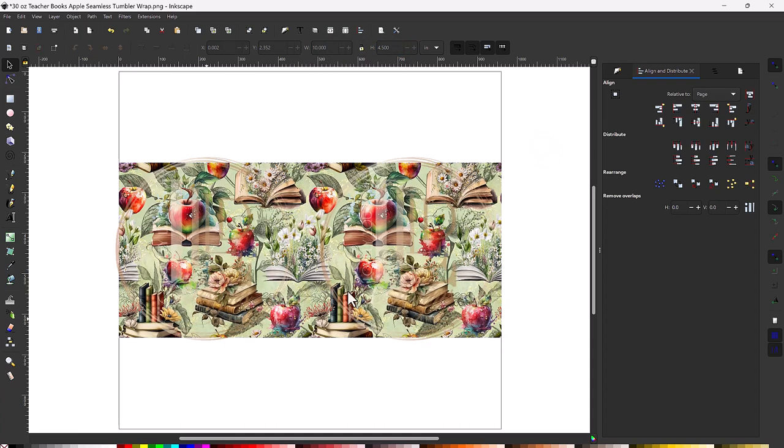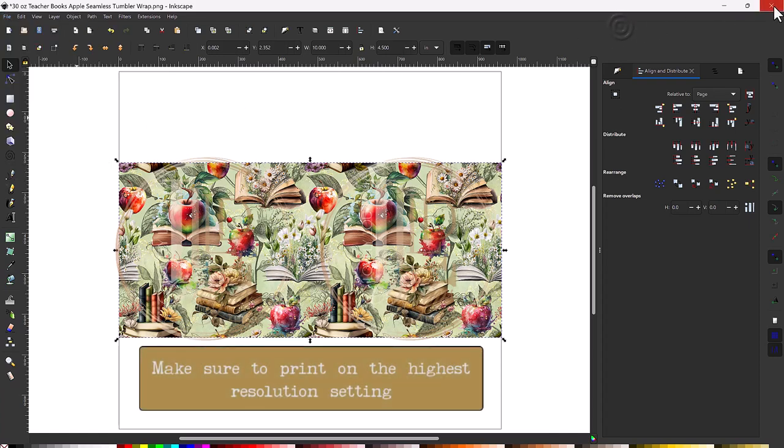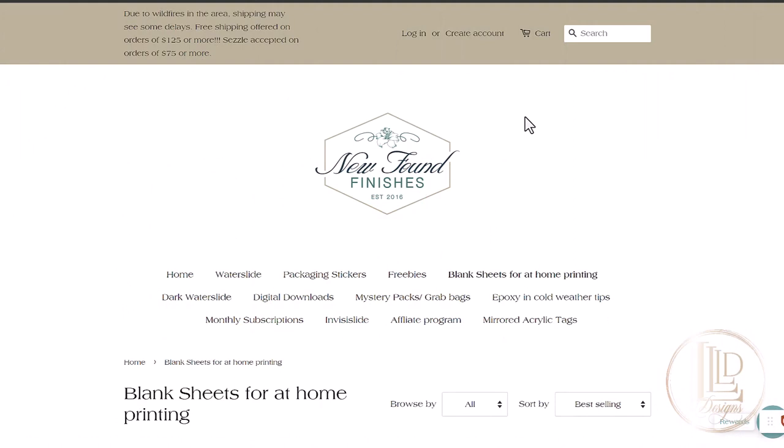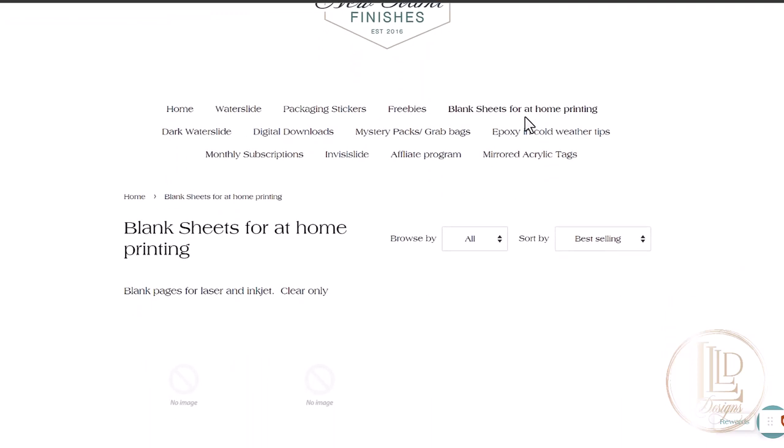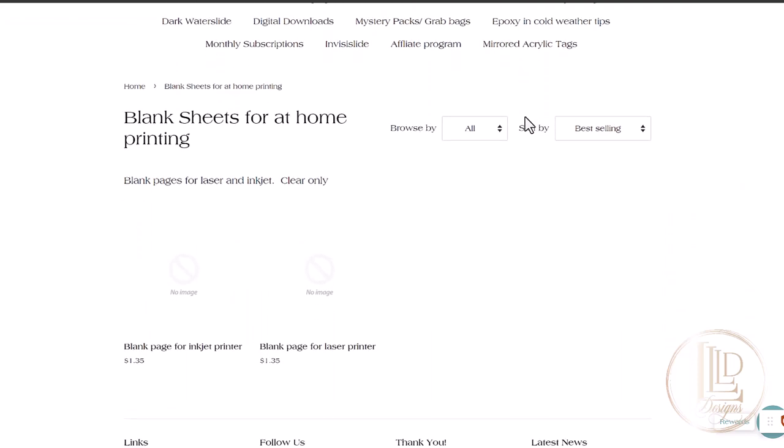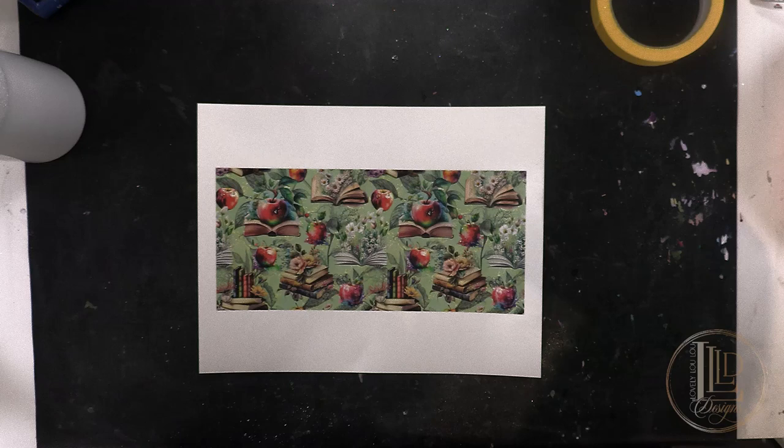At this point, you can either print through Inkscape or you can export the image to print from your preferred software by selecting file, export PNG image. I do recommend printing a test page before printing on your waterslide paper. The waterslide paper I use and recommend because of its incredible durability is from Newfound Finishes. When purchasing waterslide paper, always make sure you are purchasing the type of paper meant for your printer, so either inkjet or laser. If you are printing with an inkjet printer, you will need to seal your printed waterslide images with a few coats of clear spray sealer prior to placing the paper in the water or your ink will run. If you are using a laser printer like me, you can skip that step.